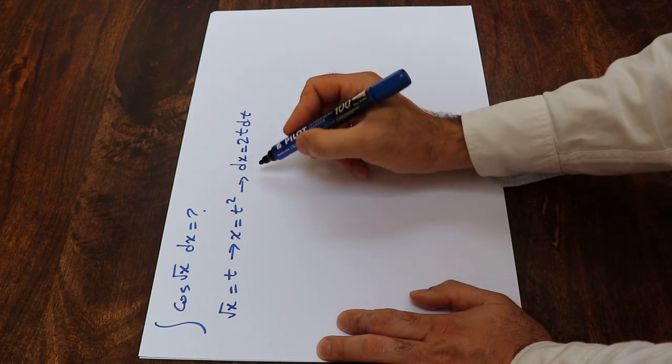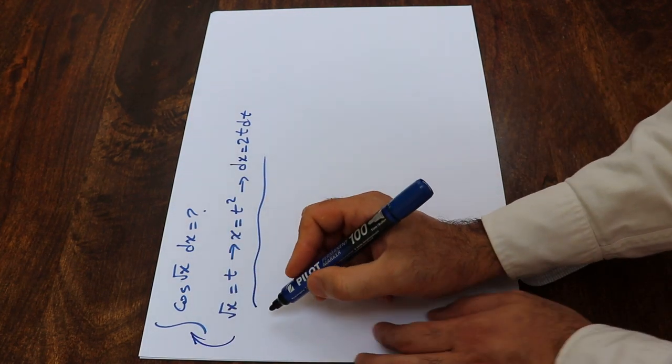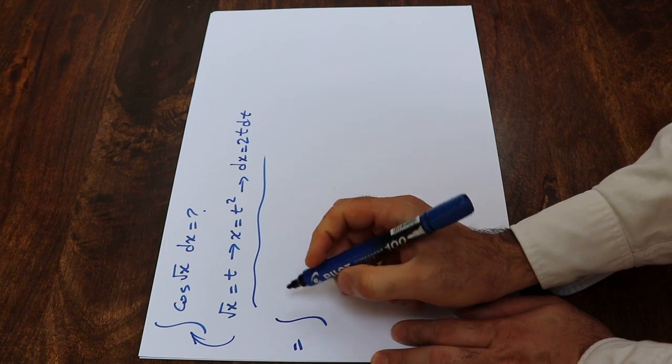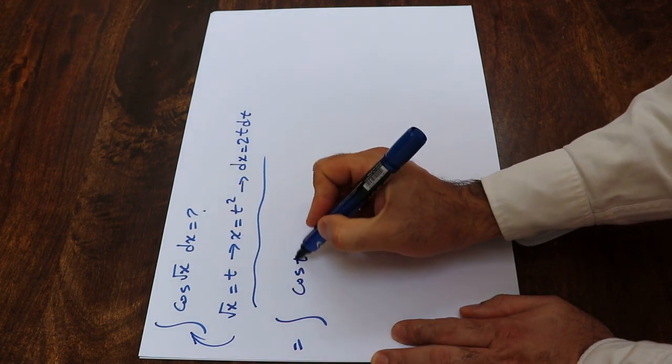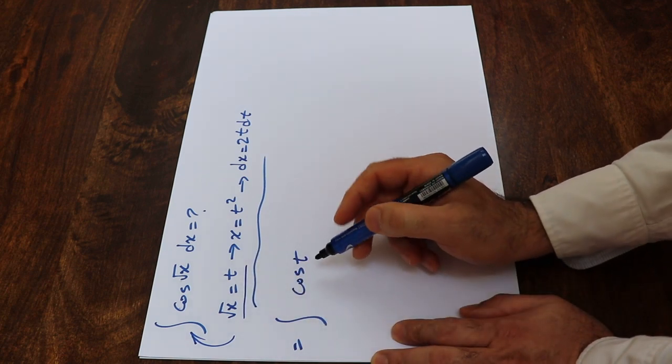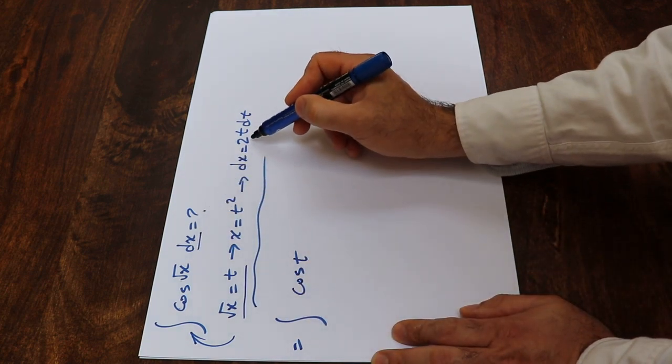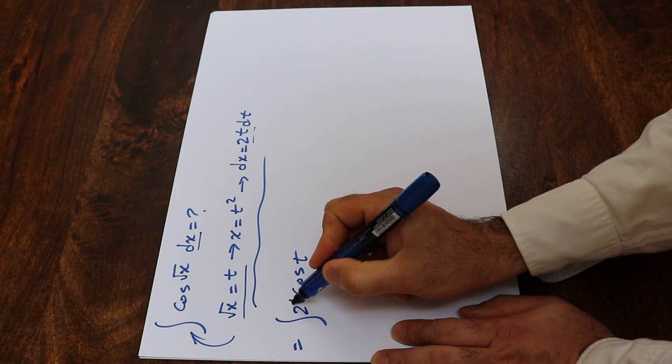So now if you substitute this expression into this integral, you can rewrite this integral as cosine t. Instead of square root of x, I write t because square root of x was defined as t. And instead of dx, I write 2t dt.